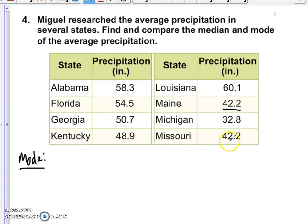So the mode is only the numbers that repeat the most frequently. Looks like we have a 42.2 there and here. But do we have any other numbers that appear more than once? Doesn't look like any others reappear. So it looks like our mode is going to be 42 and 2 tenths.